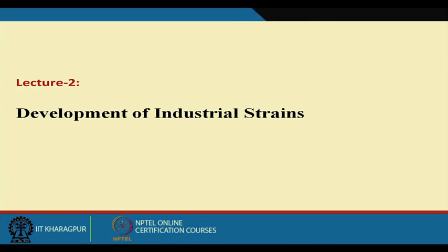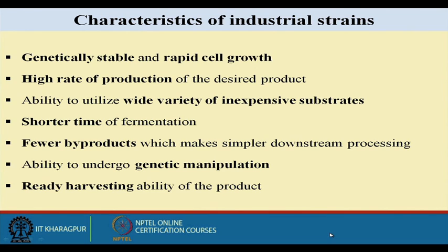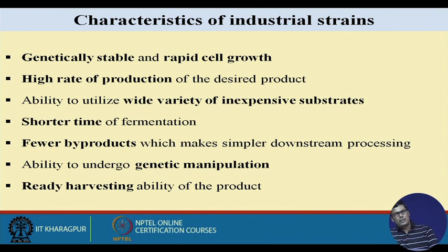The development of industrial strains is one of the important factors in biochemical industries. These industrial strains should have different characteristics. The first characteristic is to be genetically stable, meaning the biochemical characteristics of the organism should remain the same across generations, as the characteristics of the organism should not change.